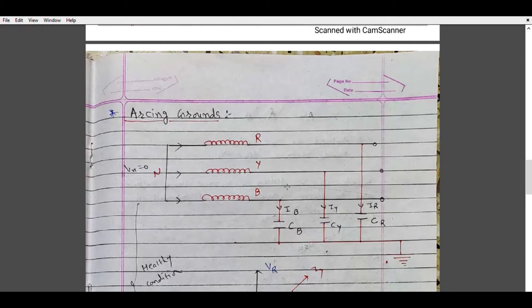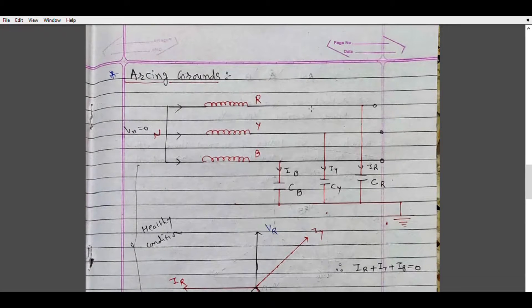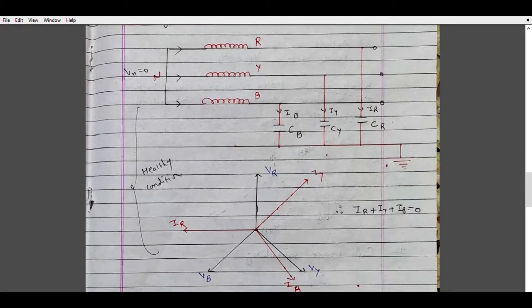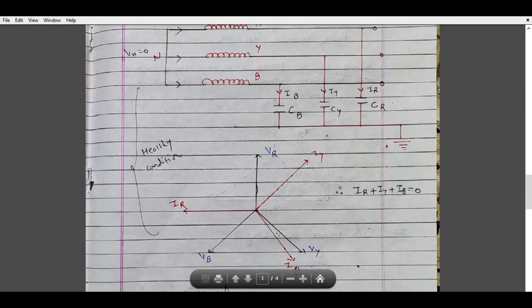This is the healthy condition, so there will be some charging current in the transmission line. The charging current flowing in the B phase is Ib, in the Y phase is Iy, and in the R phase is Ir. This is a balanced three-phase circuit, and that is why the voltages Vr, Vy, and Vb are displaced by 120 degrees with each other. The current Ir leads the voltage by 90 degrees because the charging current is capacitive in nature.